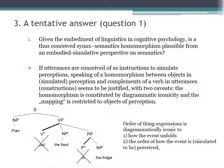Hence, I would like to give a tentative answer to the first question. Is a homomorphism plausible from the perspective of an embodied-simulative semantics? Now, the answer is, if utterances are conceived of as instructions to simulate perceptions, speaking of a homomorphism between objects in perception or simulated perception and complements of a verb in utterances seems to be justified. But with two caveats. The homomorphism is constituted by a diagrammatic iconicity and the mapping is restricted to objects of perception.